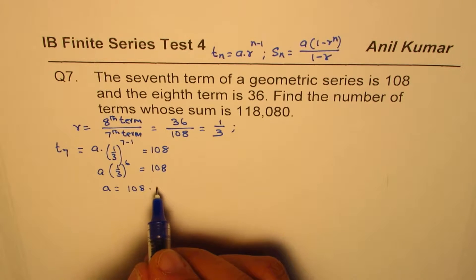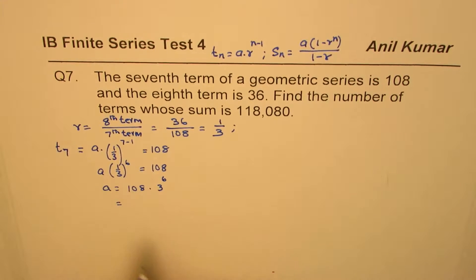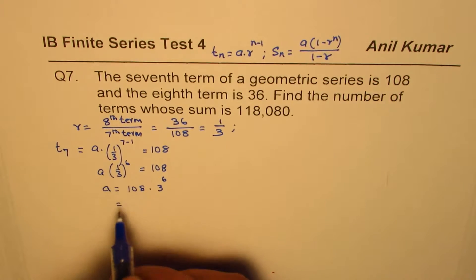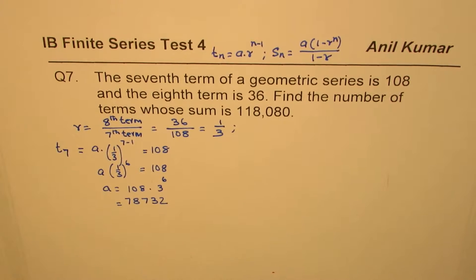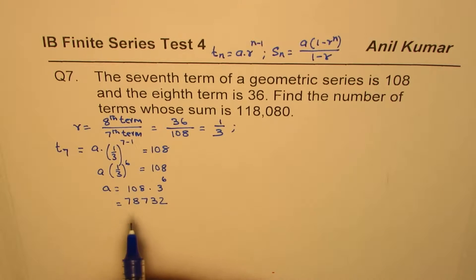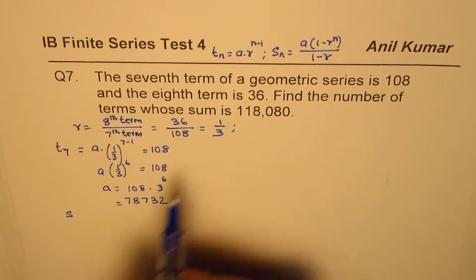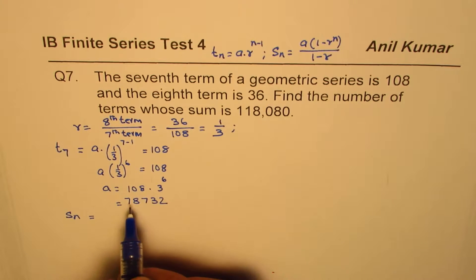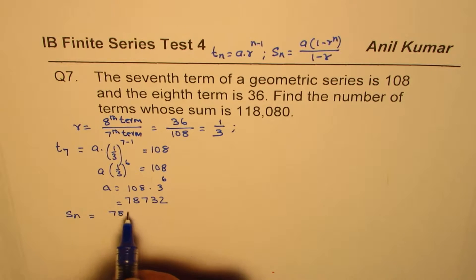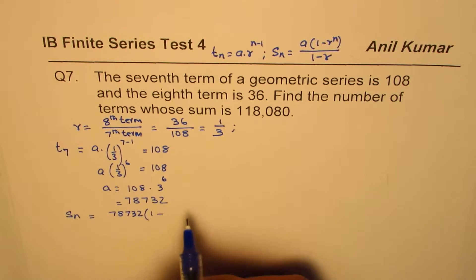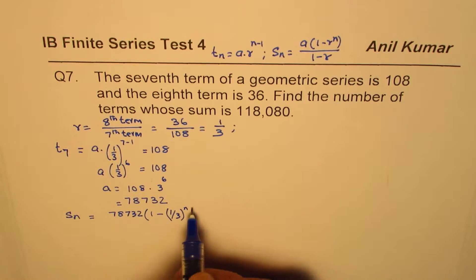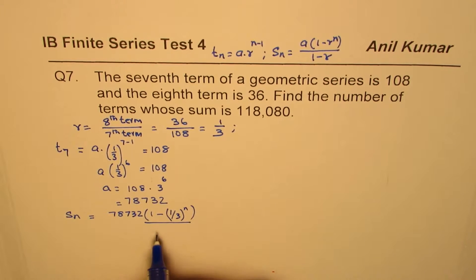So a times (1/3) to the power of 6 equals 108, which gives a equals 108 times 3 to the power of 6, which equals 78732. Now let us find the sum. Substituting into the formula, s(n) equals 78732 times (1 minus (1/3) to the power of n) divided by (1 minus 1/3).